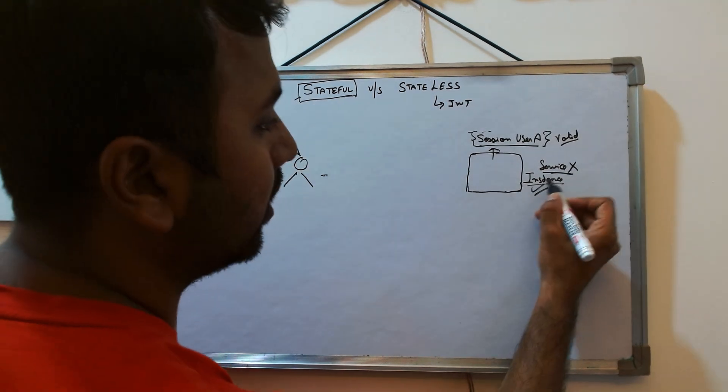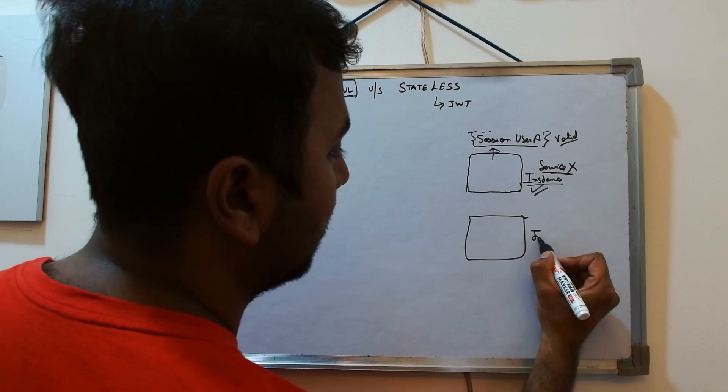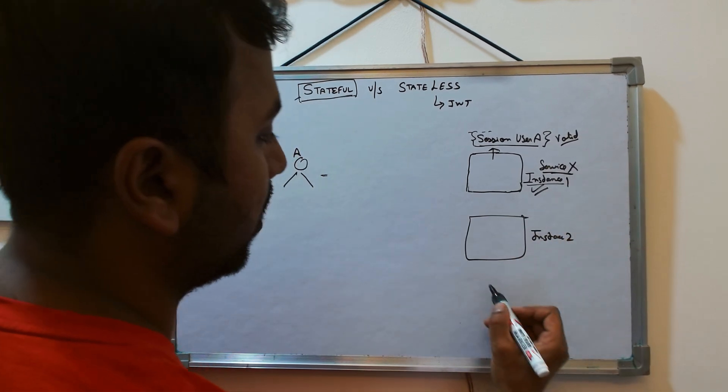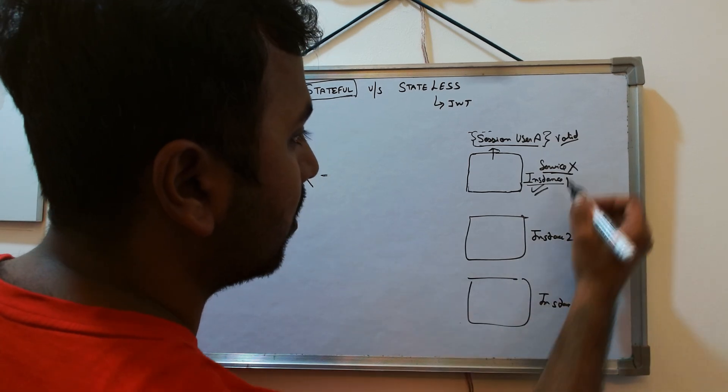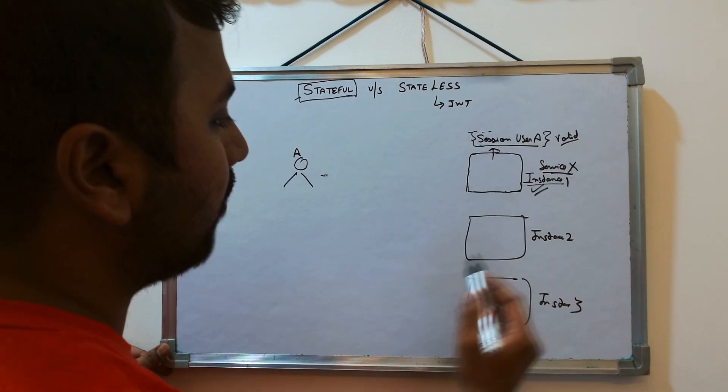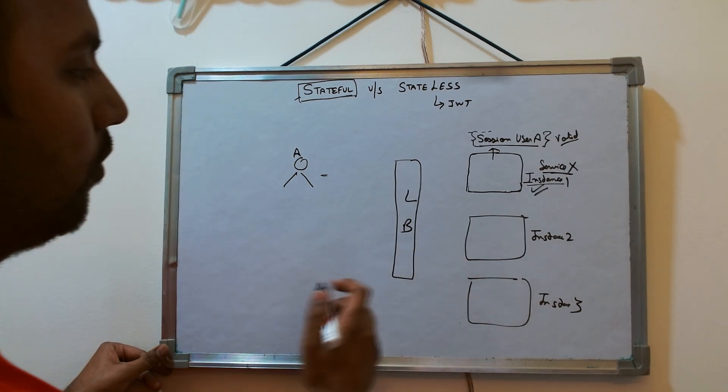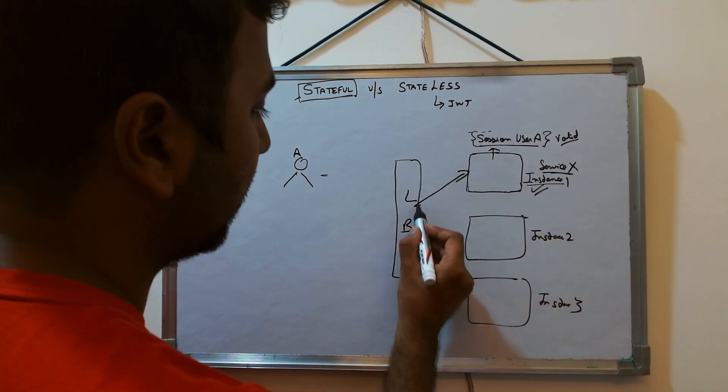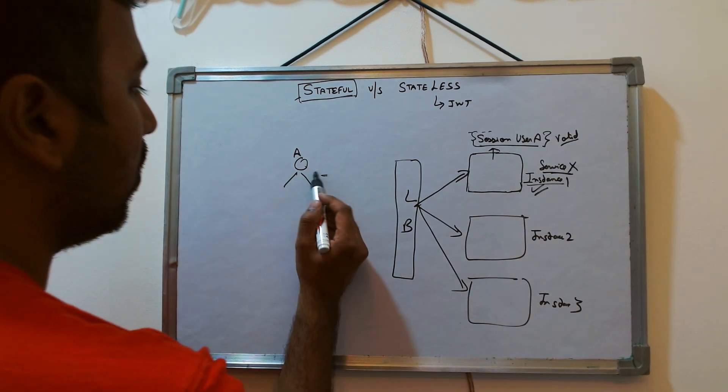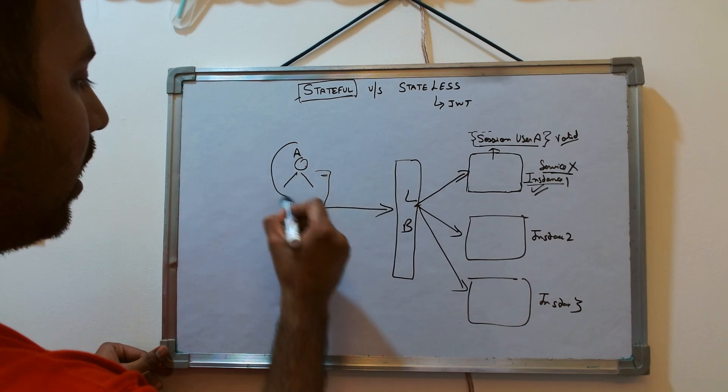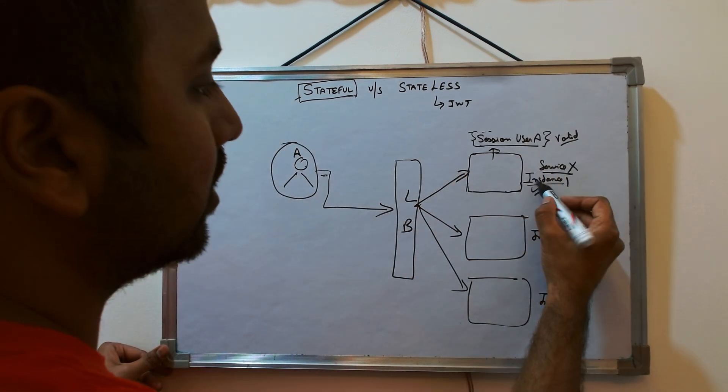For each service it's possible that there are not a single instance, there are multiple instances. Let's say this is instance two, this was instance one. Similarly there could be possible that for the same service X instance three. And whenever there are multiple instances, load balancer is there in front of it and it can distribute the traffic to any one of the instance. Now if the request comes from user A, the session of user A is there in the instance one.